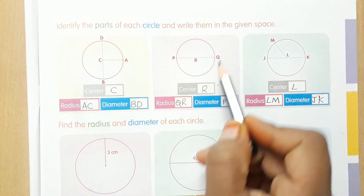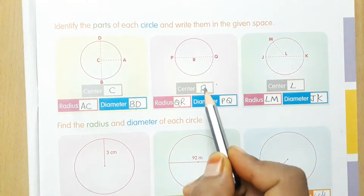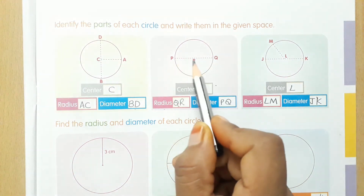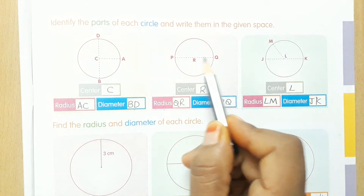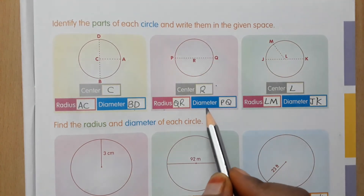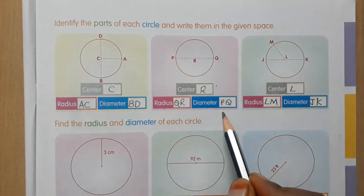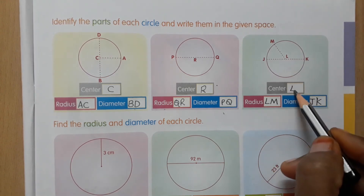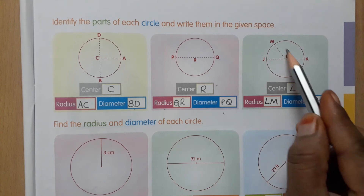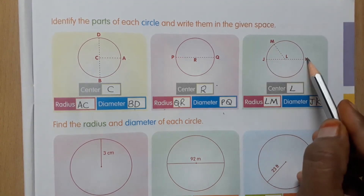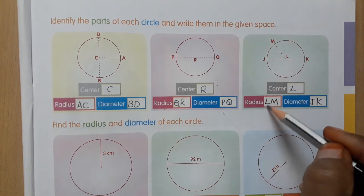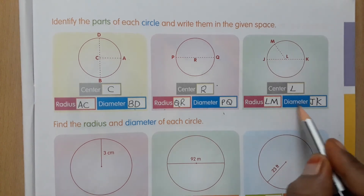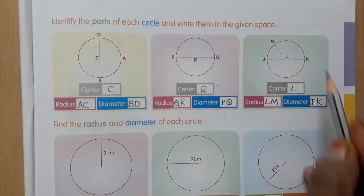Next picture: R is the center. Radius is PR or RQ — both are radius here. PQ is the diameter. Next picture: L is the center. LM is one radius, LK is one radius, LJ is one radius — three radii are given. JK is the diameter.